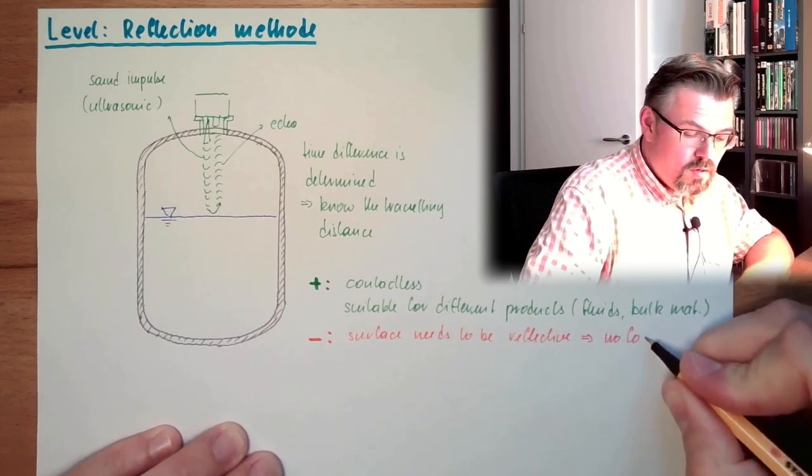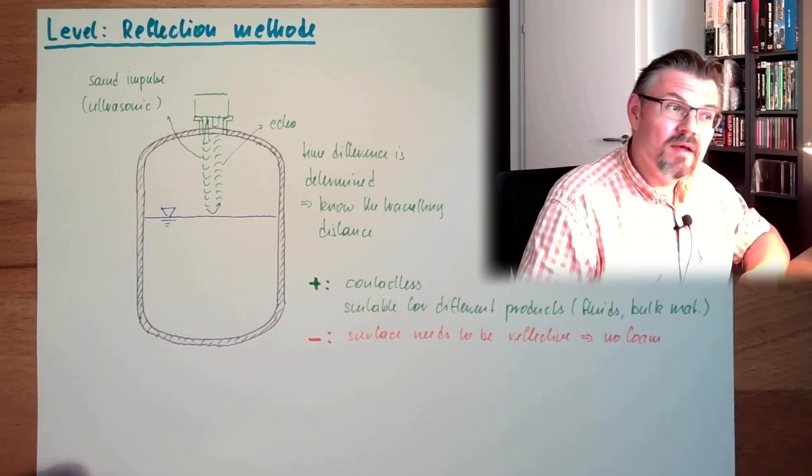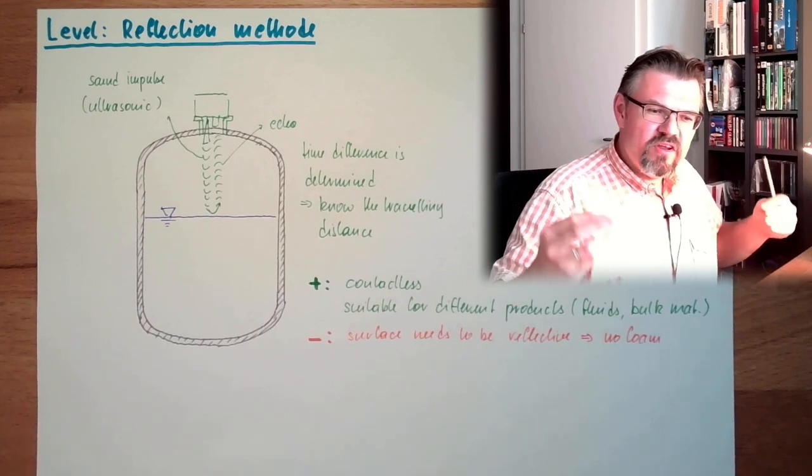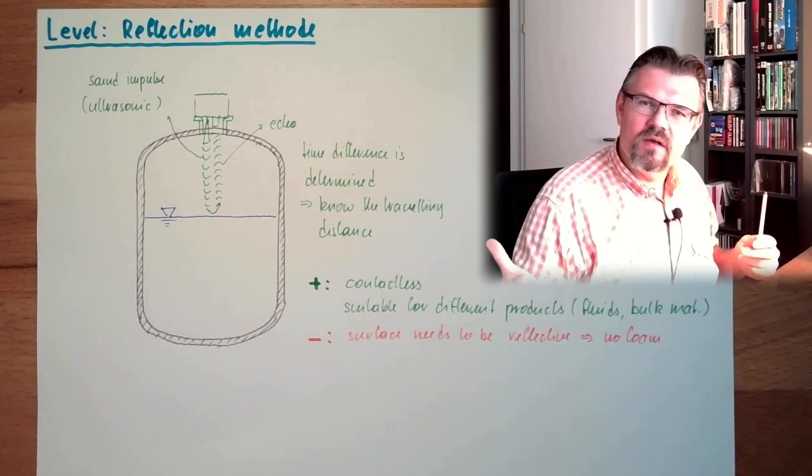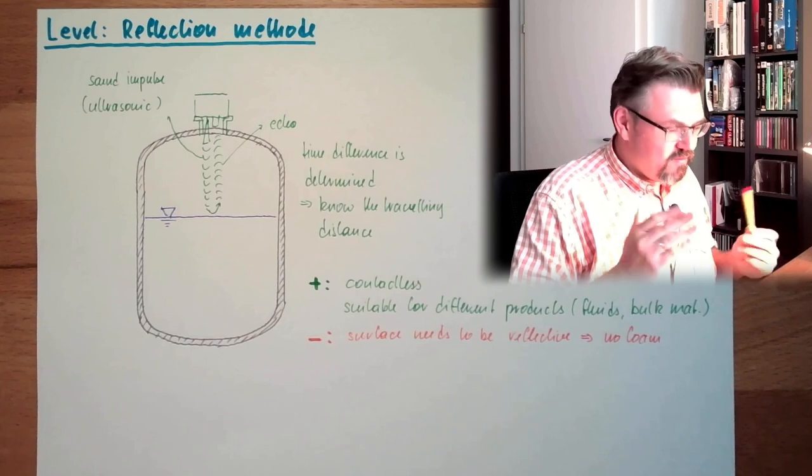So the surface must be reflective enough to produce an echo. So our red surface needs to be reflective. No foam. Foam is usually very damping. Then there are bulk materials which are very dusty, very light and very soft. They are simply producing no echo. So the surface needs to be reflective. That's it.